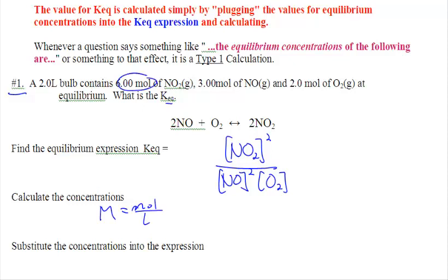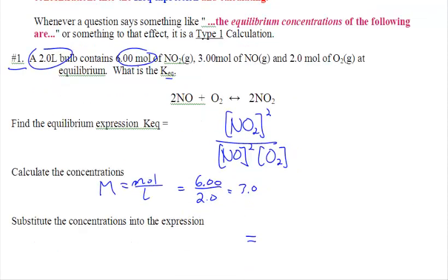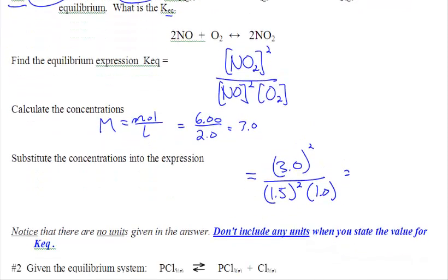In our questions, we have moles and we have liters. So it's 6.00 divided by 2, which is 3.0, 3 divided by 2, which is 1.5, and 2 divided by 2, which is 1. So we're going to plug those numbers into the expression. 3.0 squared over 1.5 squared and 1.0. Bubble that into the calculator, and you're going to get your final answer.